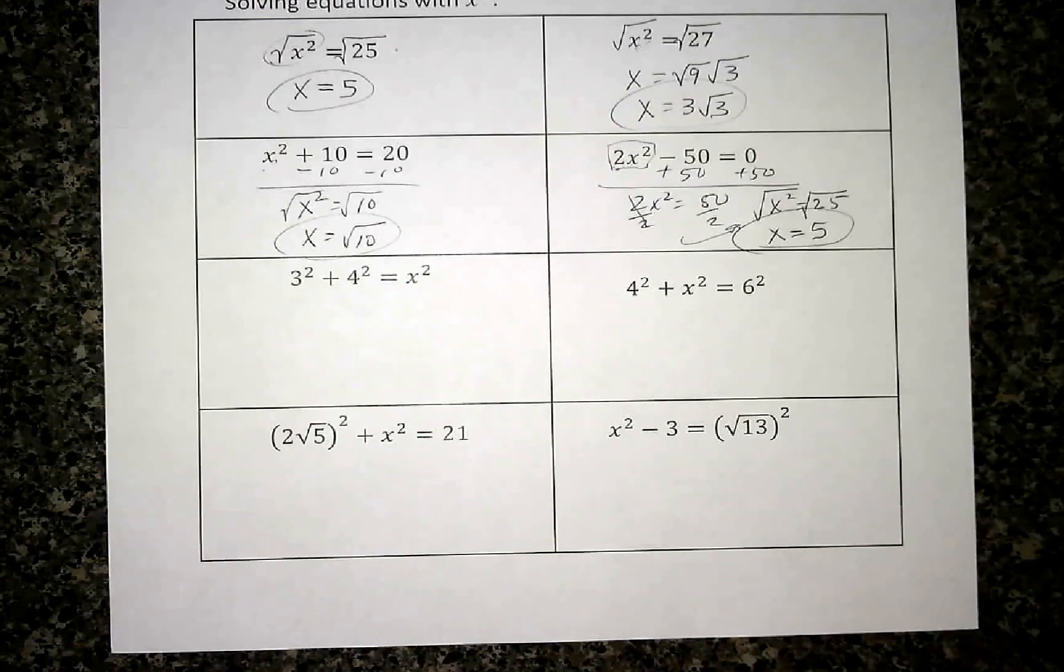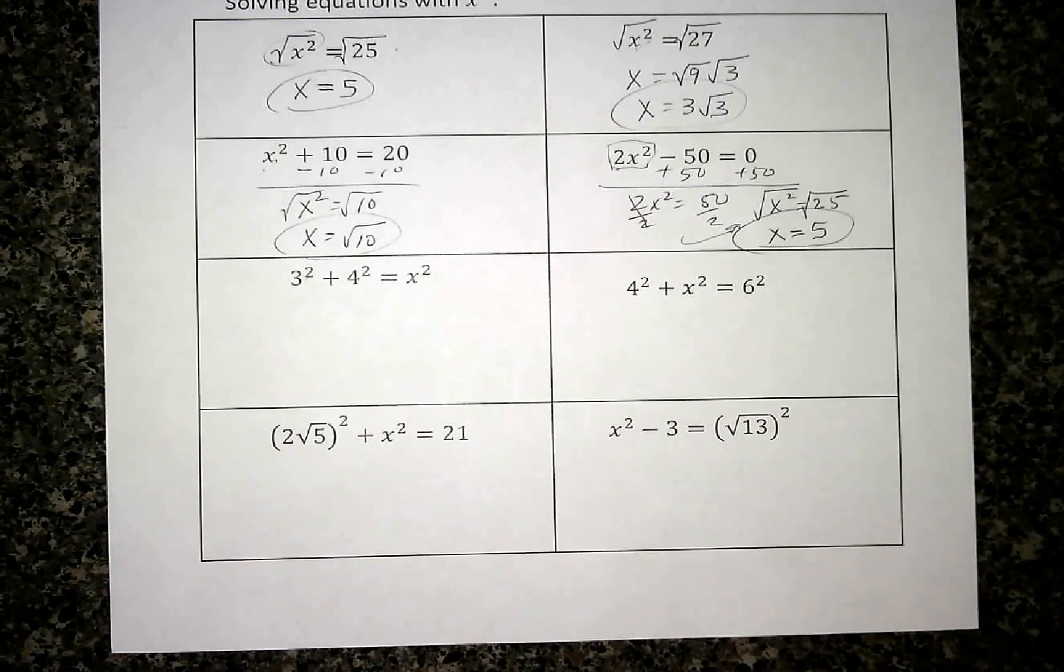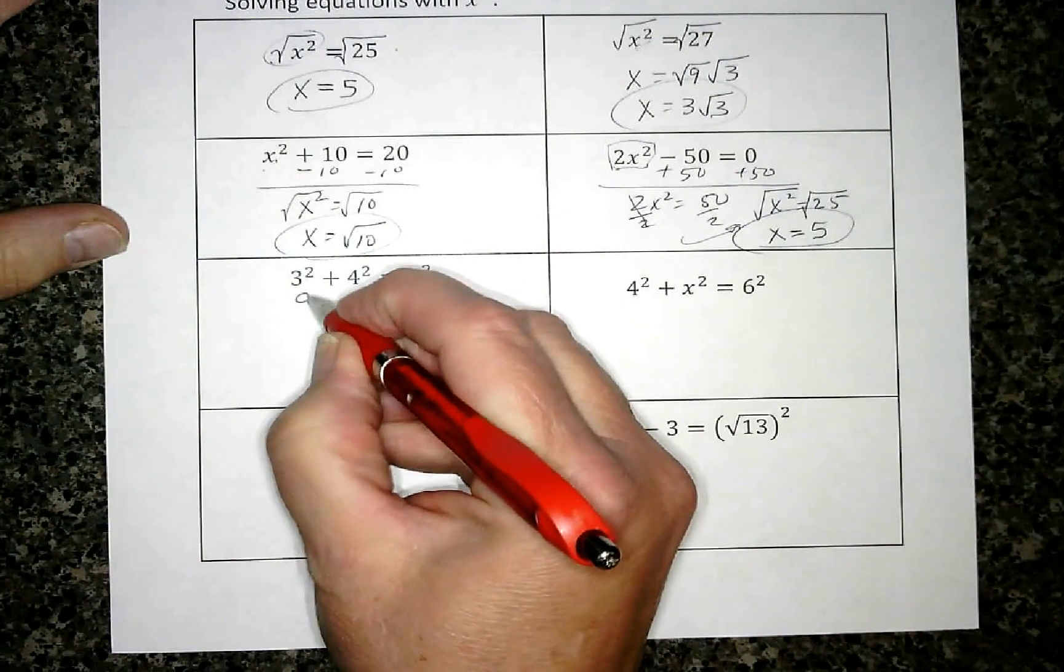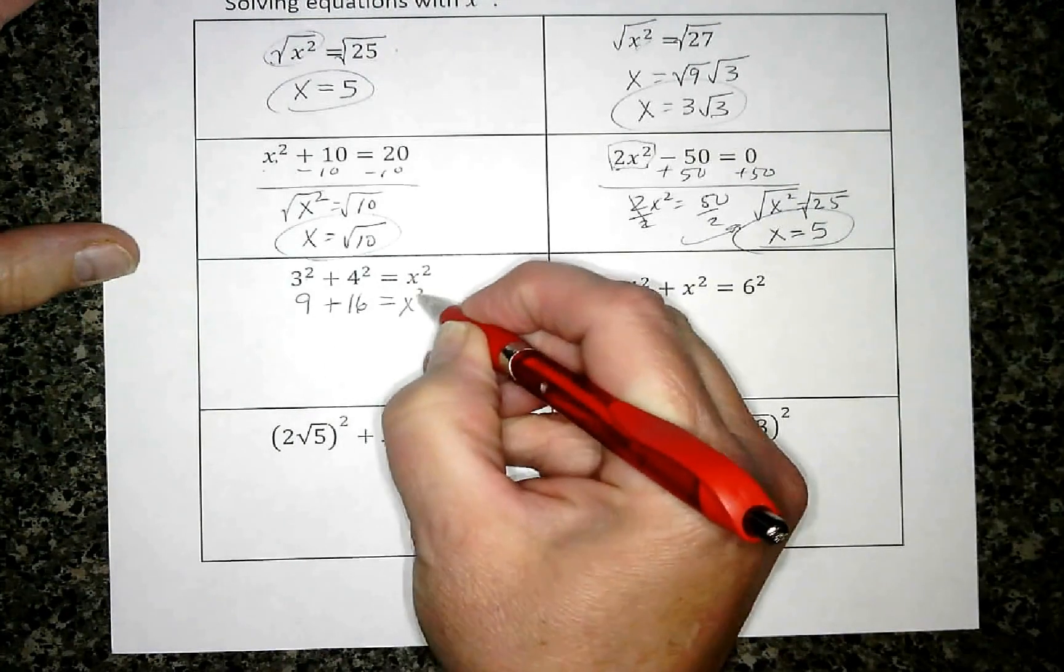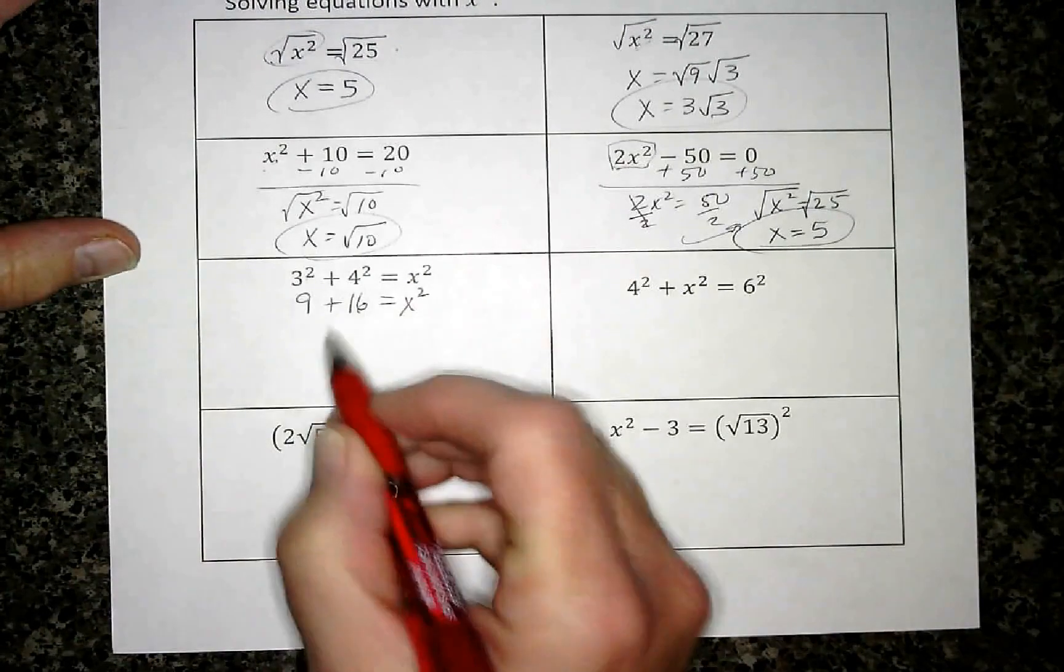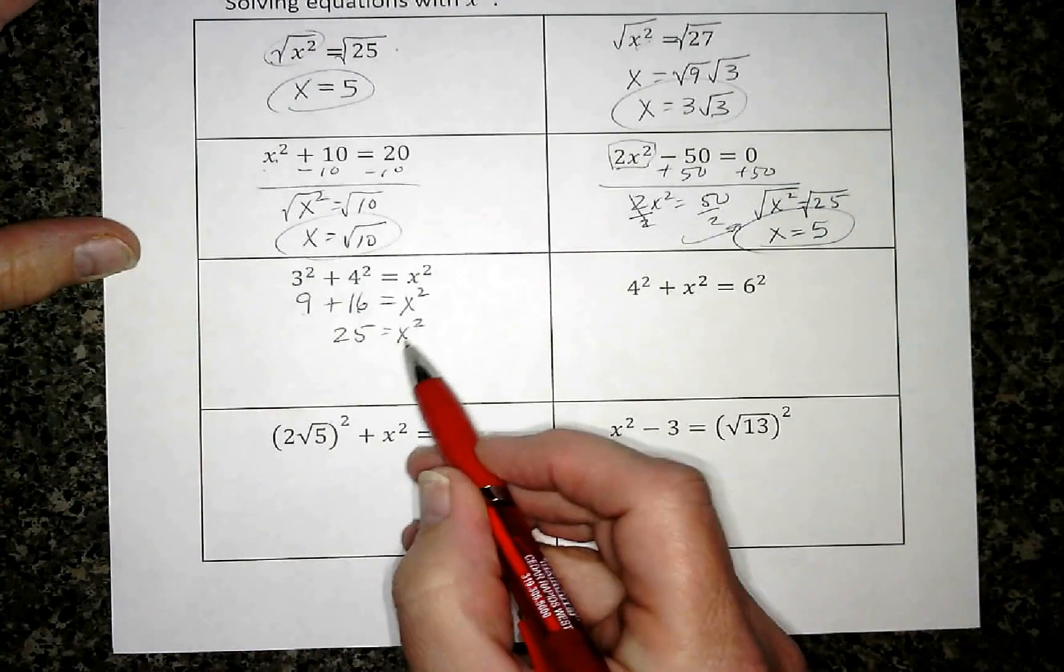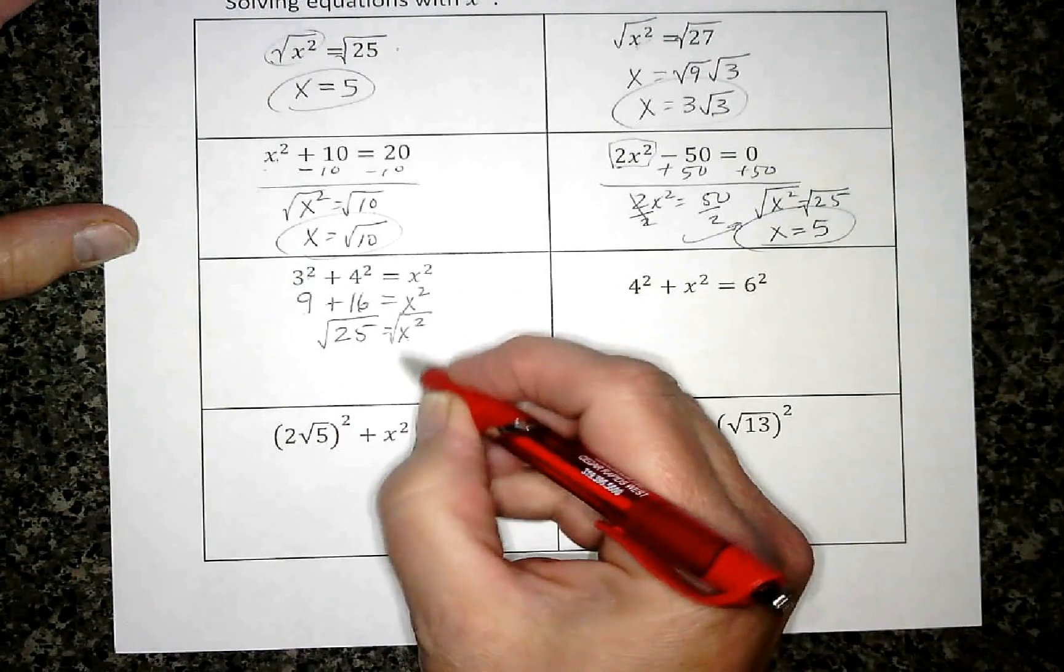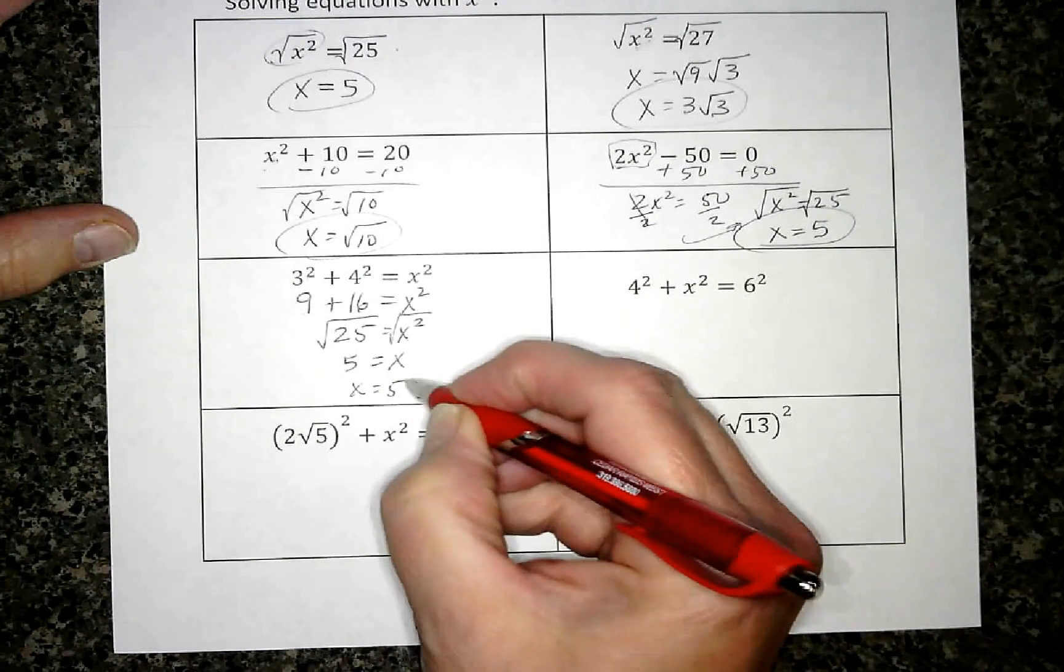Okay, when I have an equation that has a number with some exponents, order of operations says I have to do those exponents first. So this is going to be 3² which is 9, 4² is 16, that's going to equal x². Add these two together. Doesn't matter if x is on this side or the other side. I'm going to square root so I just get x. The square root of 25 is 5, so x = 5.